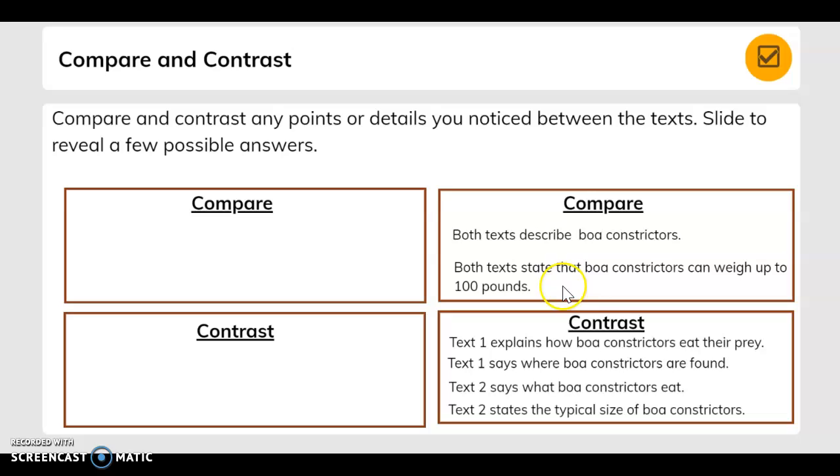When we contrast, text 1 explains how boa constrictors eat their prey. Text 1 also says where boa constrictors are found. Text 2 says what boa constrictors eat. Text 2 states the typical size of boa constrictors.